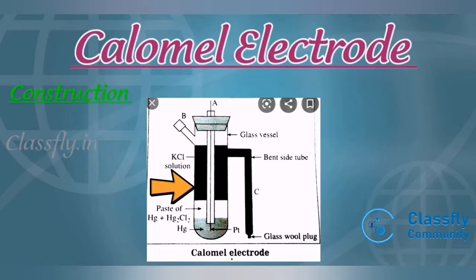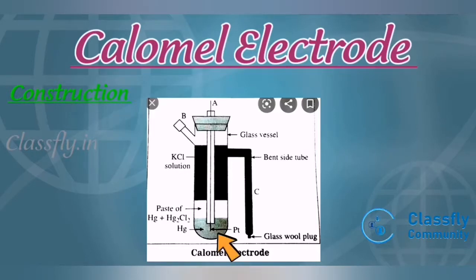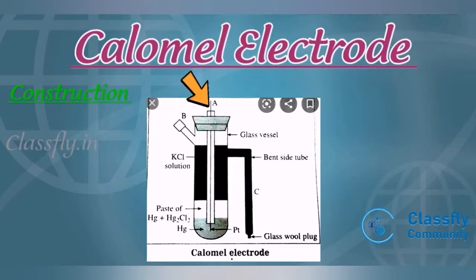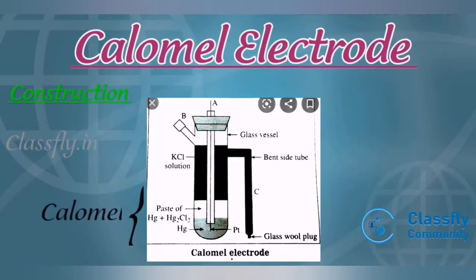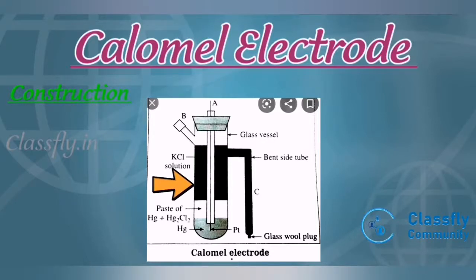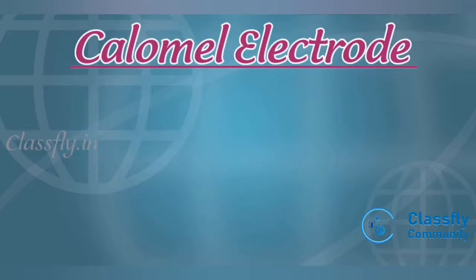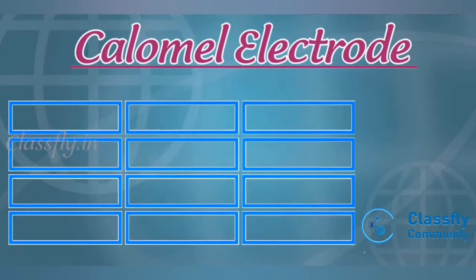In the construction of a calomel electrode, a glass tube is provided with a bent side tube and another side tube. A little mercury is placed at the bottom of the dry glass tube. A rubber bung carrying a thin glass tube with a platinum wire is then inserted, taking care that the platinum wire is dipped into the mercury. The mercury is then covered with a layer of mercury and mercurous chloride — that is, calomel paste. The tube is then filled with a potassium chloride solution of a definite concentration.